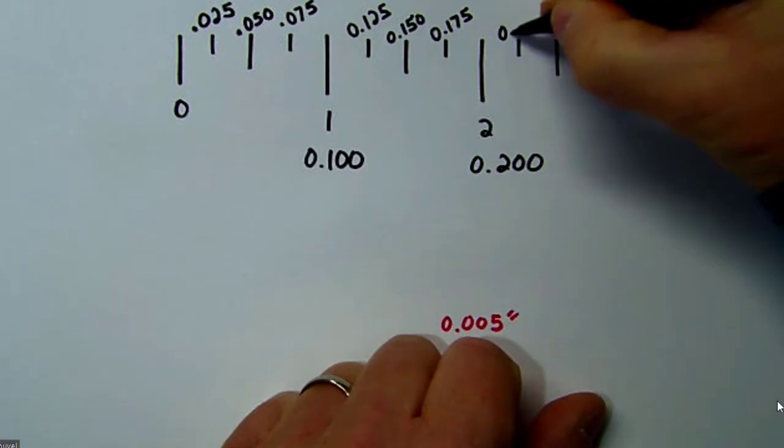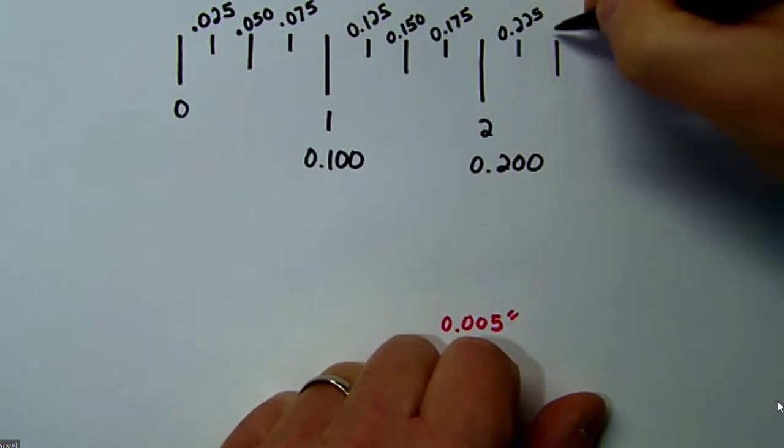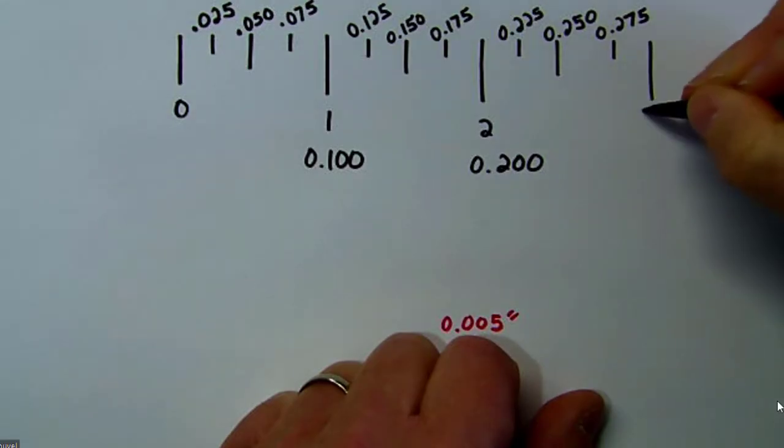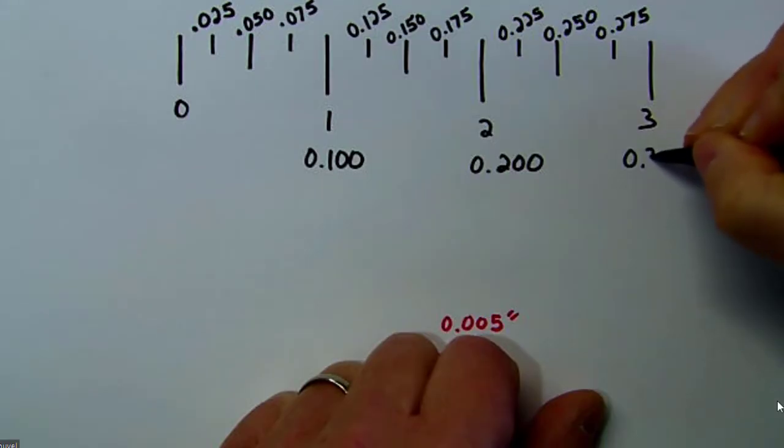Then .250, and the next one would be .275, and at that point you can probably see the pattern, and then we're at .300.